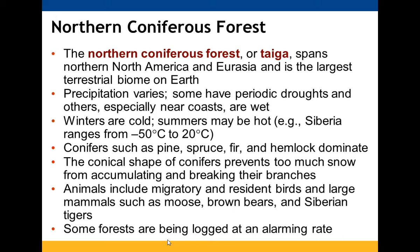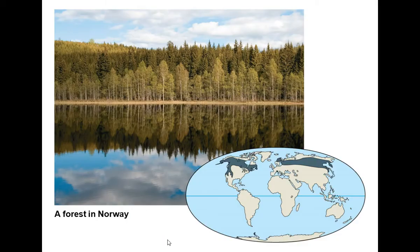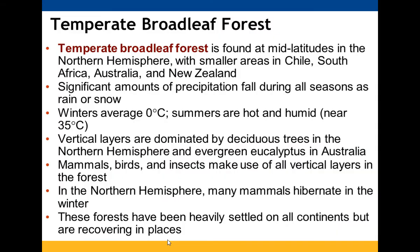The northern coniferous forest, or taiga, is found in northern North America and Eurasia and is the largest terrestrial biome on the planet. Precipitation varies — it can range from drought to very wet — and these forests tend to be found near coasts with cold winters and hot summers. Siberia's temperatures range wildly from negative 50 to 20 degrees Celsius. Conifers dominate; their conical shape prevents snow buildup that would break branches. Animals include migratory and resident birds, moose, brown bears, and Siberian tigers. These forests are being heavily logged.